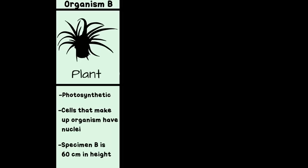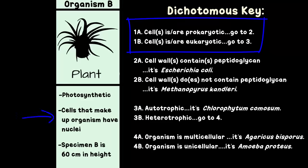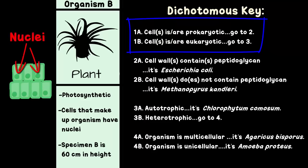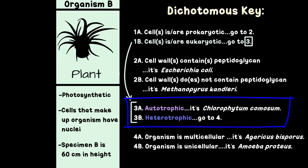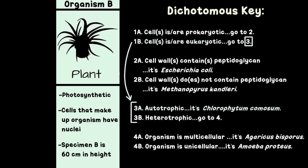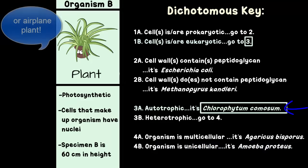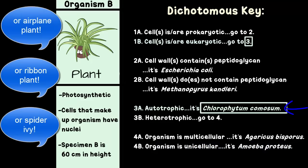Let's do one more. Mystery Organism B, a plant. Again, always start with number 1. The details mention nuclei — that's the plural of nucleus — this organism is made up of many cells that all have a nucleus, making it a eukaryote. So that takes us to number 3. Are plants autotrophs or heterotrophs? They make their own food from the sun by photosynthesis, making them autotrophs. According to this key, this is the scientific name of this plant. The common name is spider plant, but the scientific name is much more fancy.